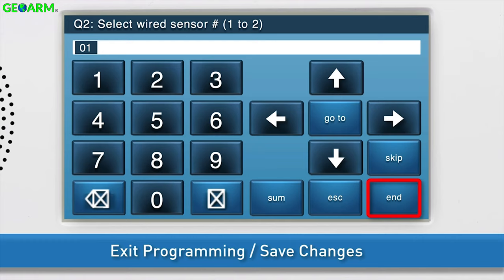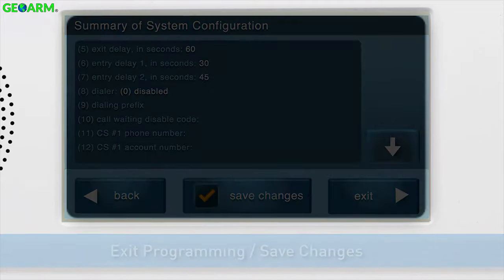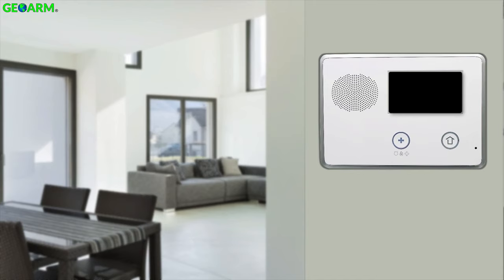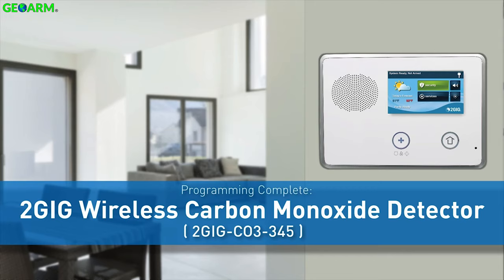Then press End. The option to save changes is selected by default. Finally, press Exit. The system will automatically save the new information, and the panel will reboot. The 2GIG Wireless Carbon Monoxide Detector is now programmed into the 2GIG GC2 panel.